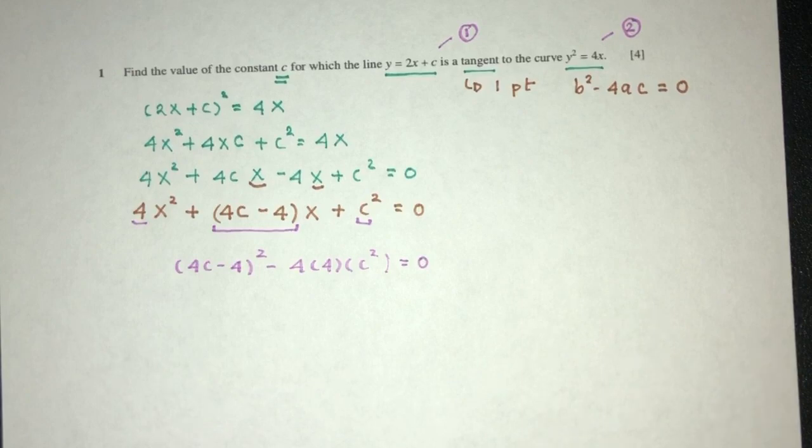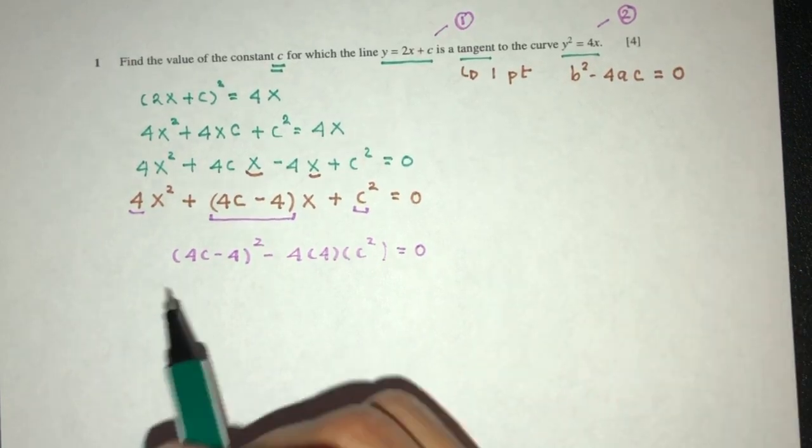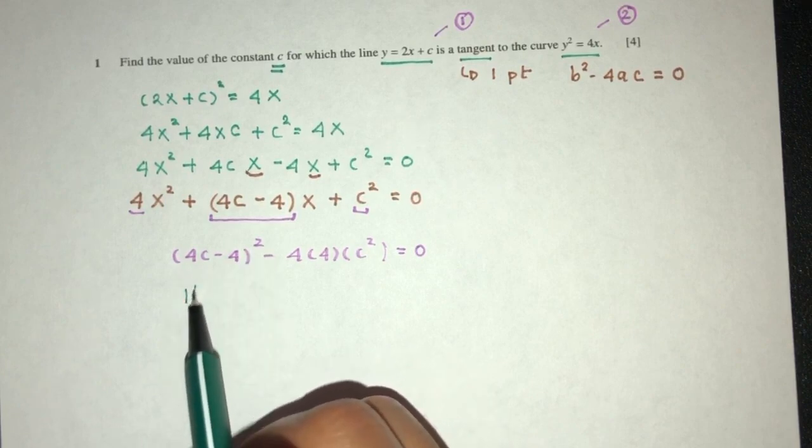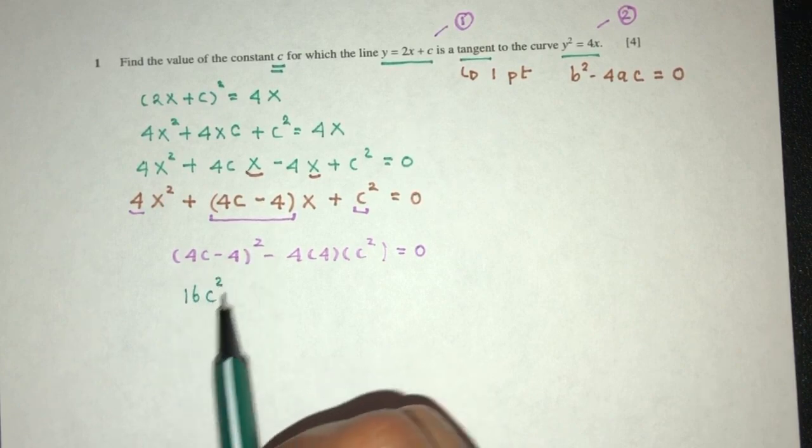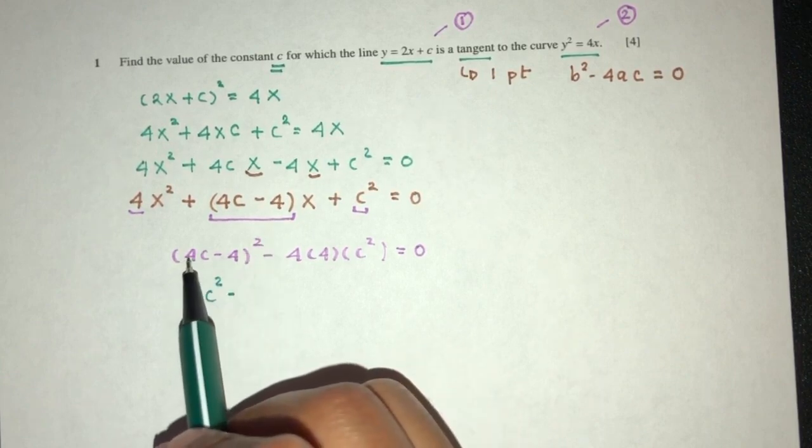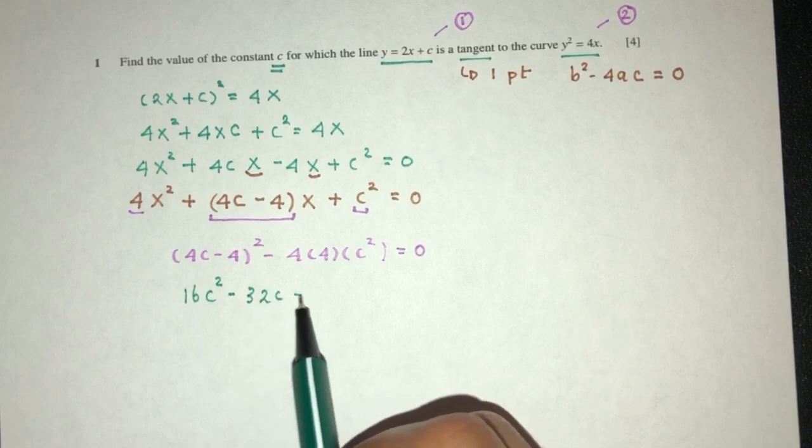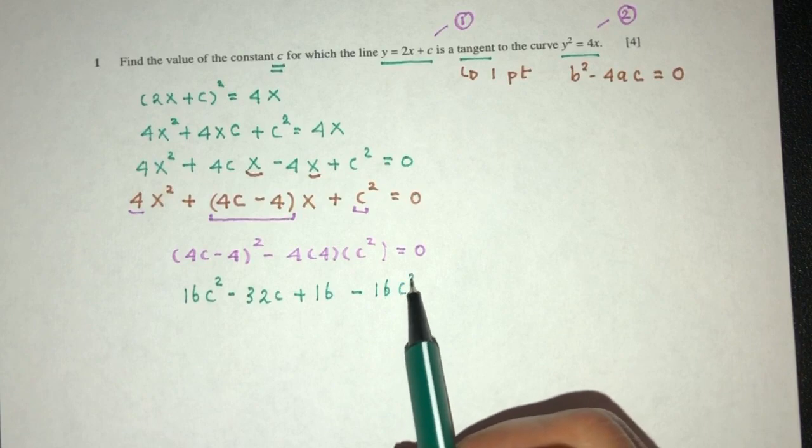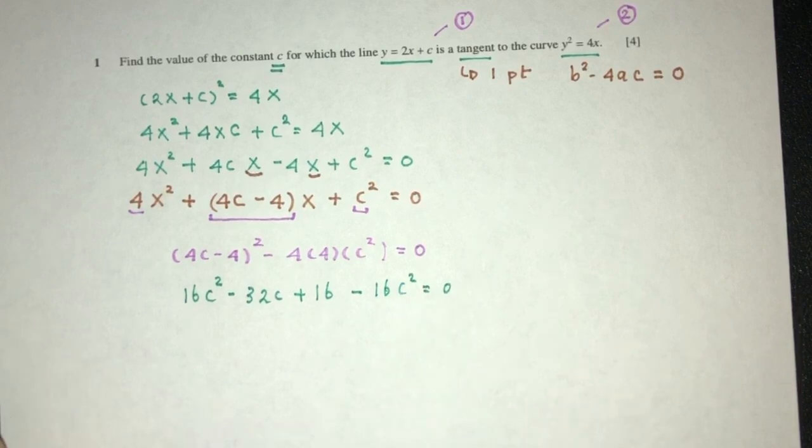We just have to solve this equation and find the value of c. Here we can expand, here you will have 16c squared minus, 2 times 4 is 8, 8 times 4 is 32, so c plus 16, then minus 16c squared. This and this will cancel out, as you can see.